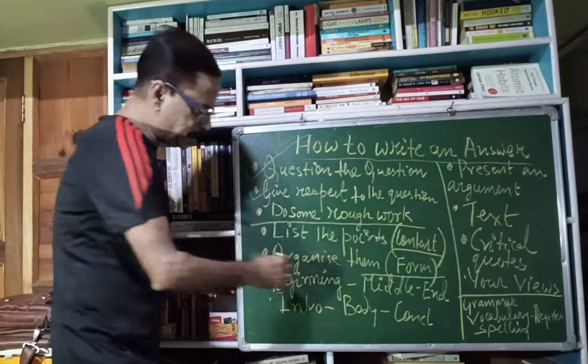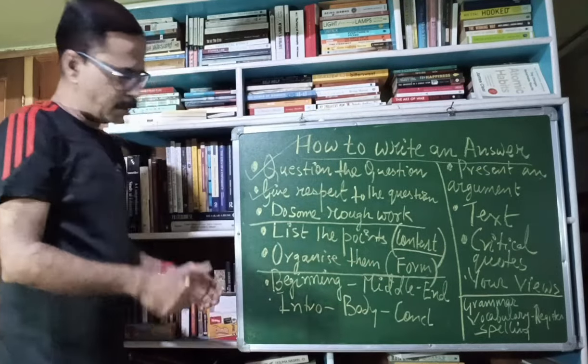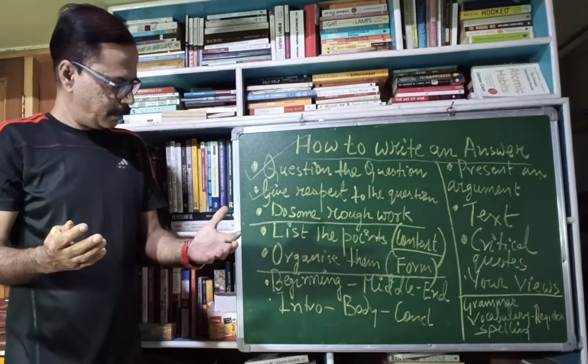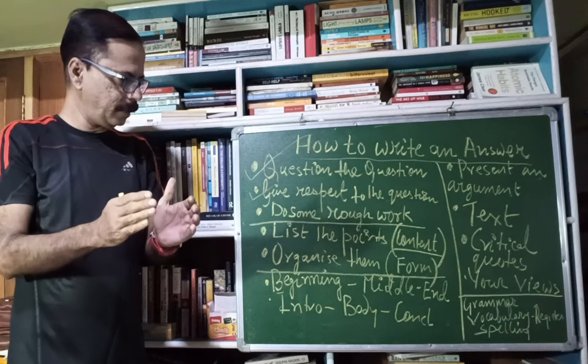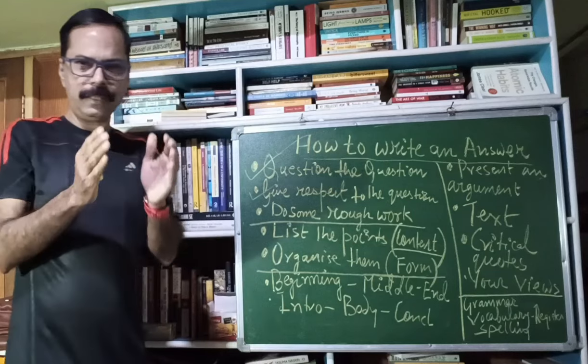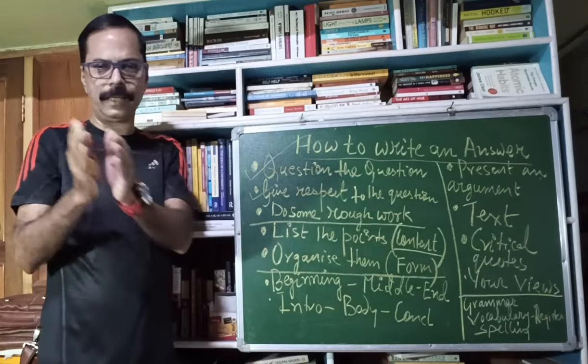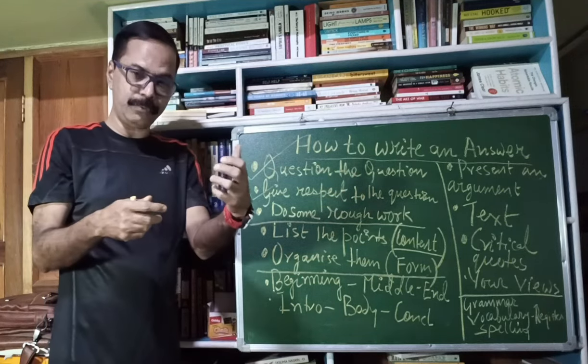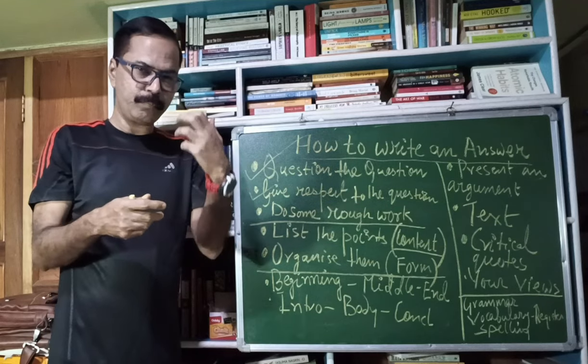Now how to organize the answer. Here we actually go back to the Aristotelian way again. Every answer should have a beginning, a middle and an end. As simple as that. You have to organize your answer into these three parts: beginning, middle and end. That will make the answer impressive. The examiner will really be tempted to read the answer.